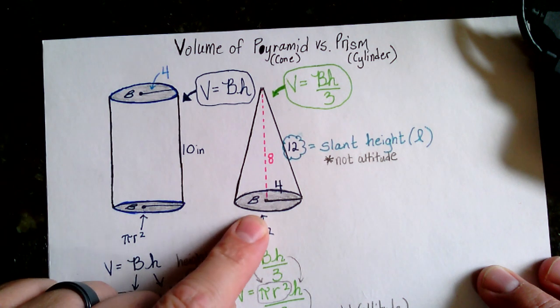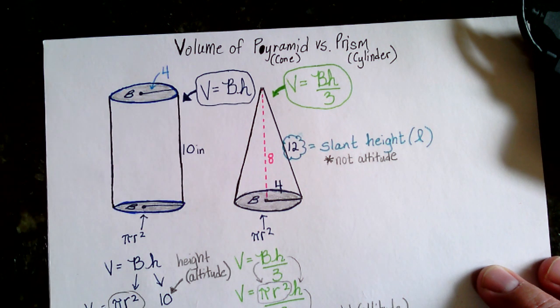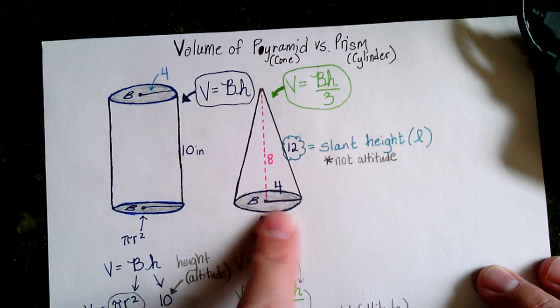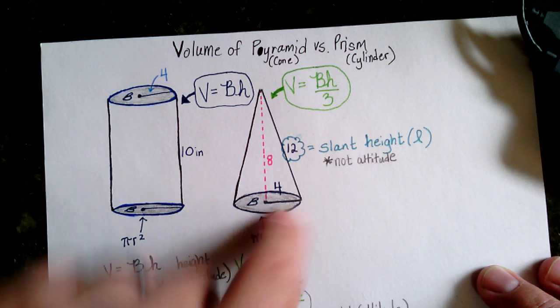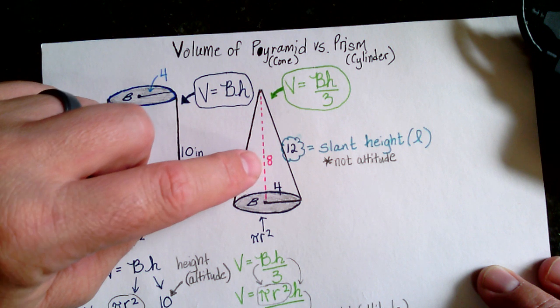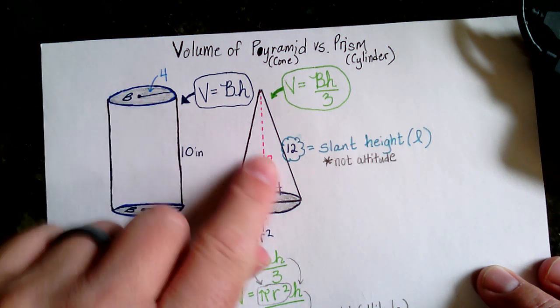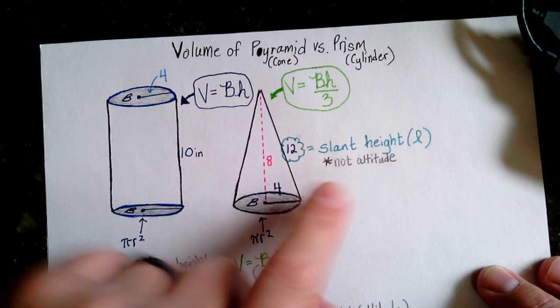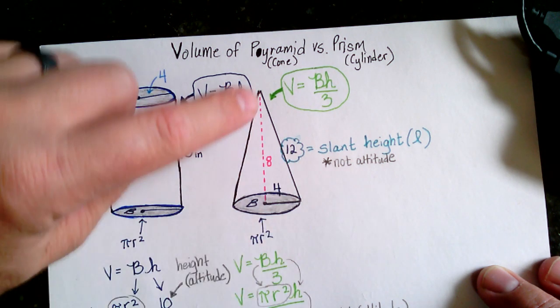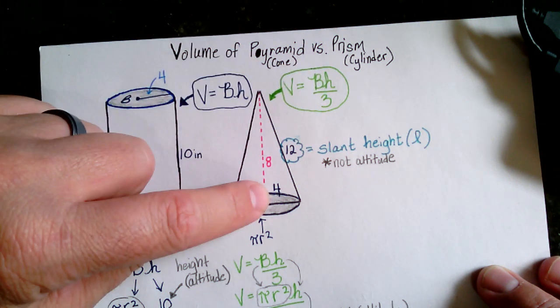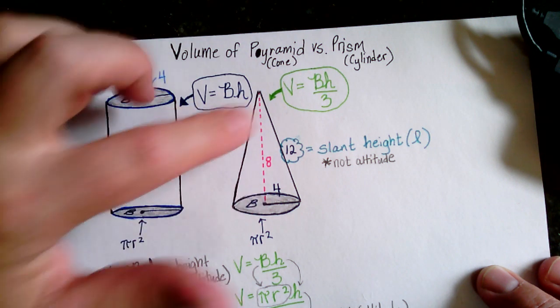If it has one base and comes to a point, then technically it's a pyramid or a cone, and the formula is the area of the base, down here. In this case, it's a circle, times the height, which is also called the altitude. That's this number eight right here. Not to be confused with this height, that's called the slant height, it's not the altitude. So it's the area of the base times the altitude or the height, divided by three.